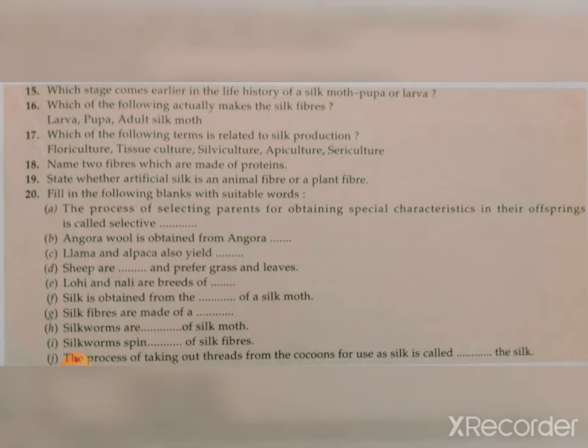Question nineteen: State whether artificial silk is an animal fiber or a plant fiber. Artificial silk — also called rayon — is a plant fiber and it is made of cellulose. The answer is rayon.